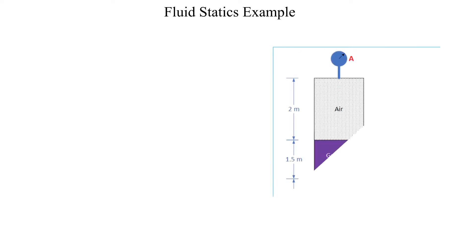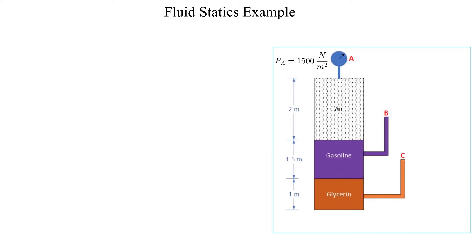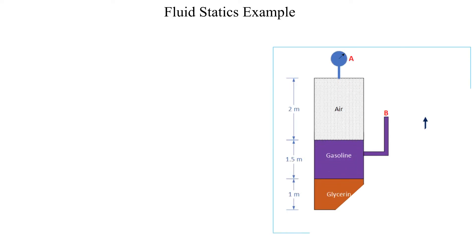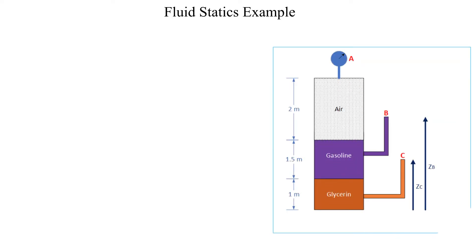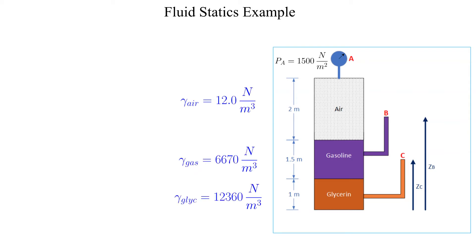Let's label point alpha to be at the top of the air layer, point bravo at the top of the standpipe connected to the gasoline, and finally point charlie at the top of the standpipe connected to the glycerin. Note that points bravo and charlie are exposed to atmospheric pressure at zero pascals gauge. The specific weight or weight density of each fluid is provided. Our goal is to determine the height to the top of each standpipe referenced from the bottom of the tank.